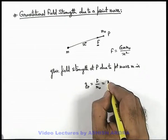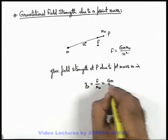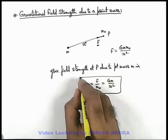And its magnitude will be, on substituting the values it is Gm by x square, here m₀ get cancelled out.